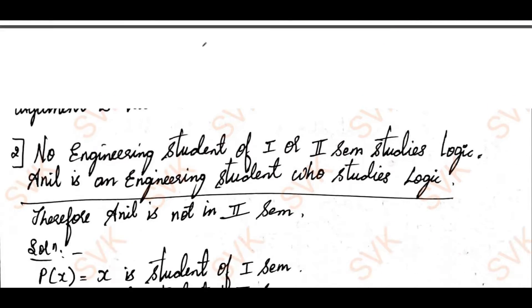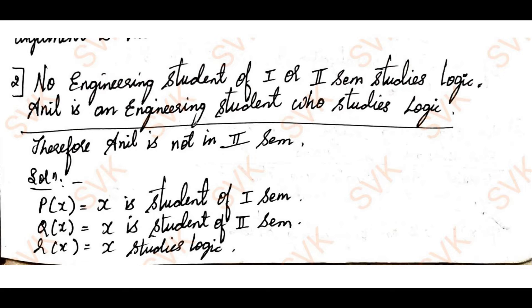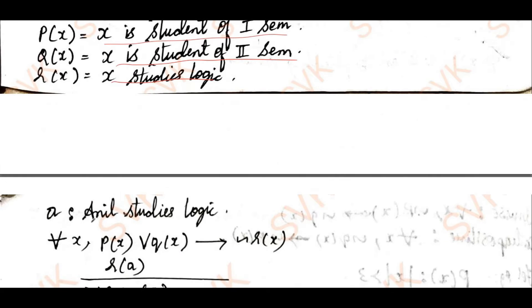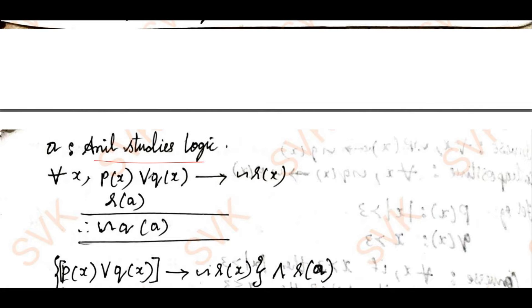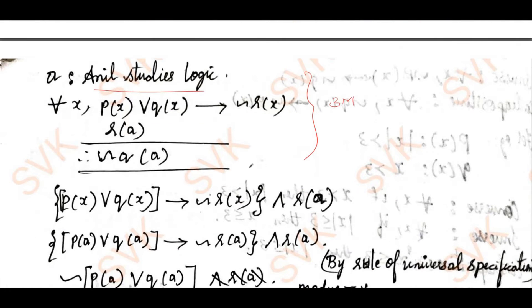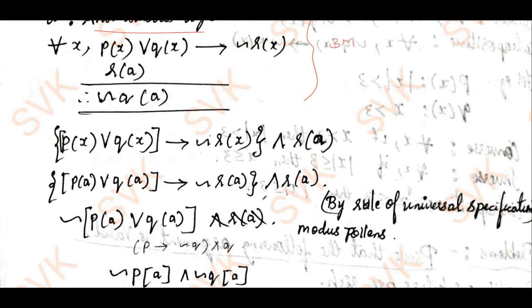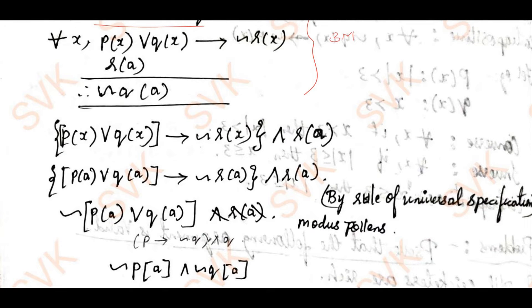Moving on to the next question — they have given a statement and an argument we need to verify. I am defining P(x) as 'x is a student of first semester,' Q(x) as 'x is a student of second semester,' and R(x) as 'x studies logic,' with Anil specifically studying logic. In terms of quantifiers: for all x, P(x) ∨ Q(x) → ¬R(x); R(a); therefore ¬Q(a). Defining these quantifiers earns at least three marks.